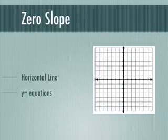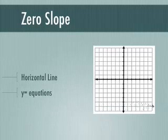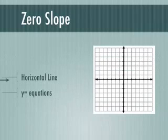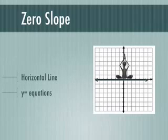Zero slope is neither up nor down. It's going to be a horizontal line — one of our y-equals equations. A y-equals equation is a horizontal line with zero slope. Our guy is going zero — not going up, not going down, just chilling.